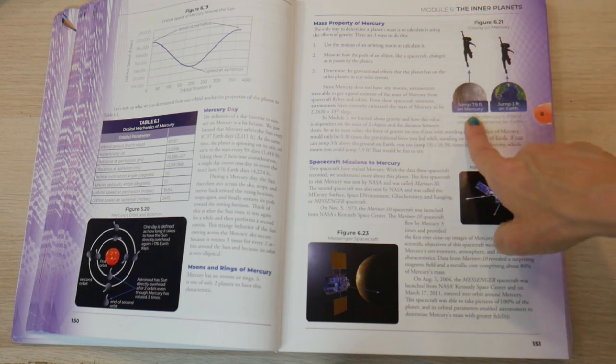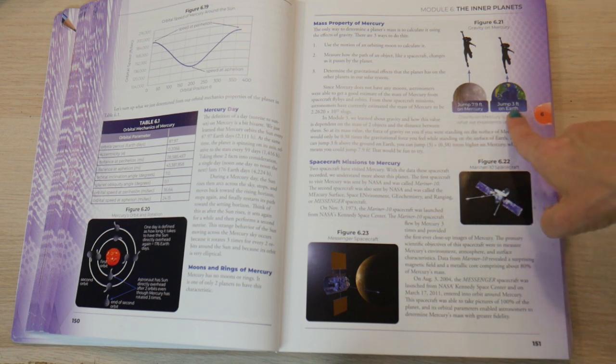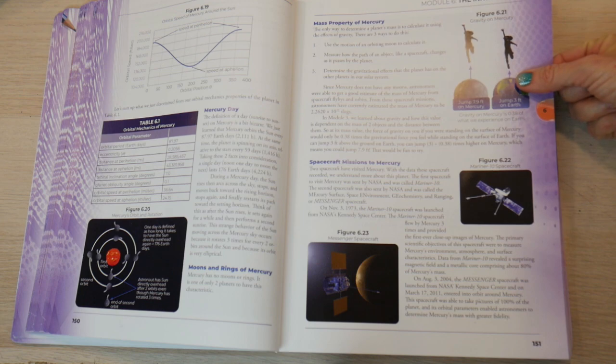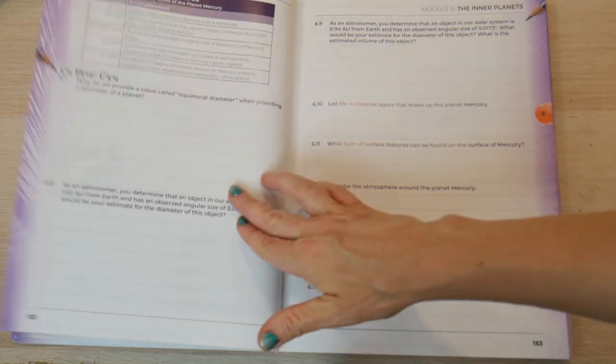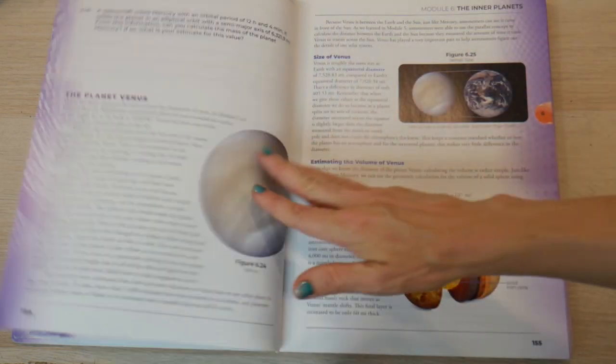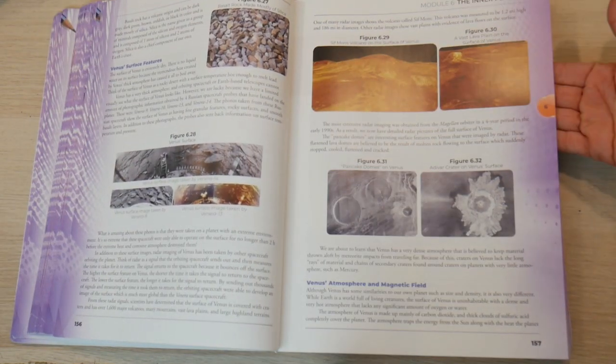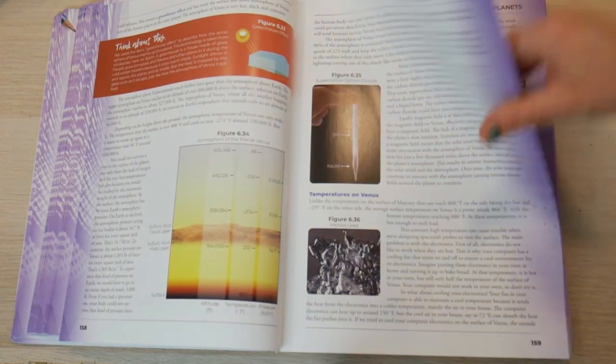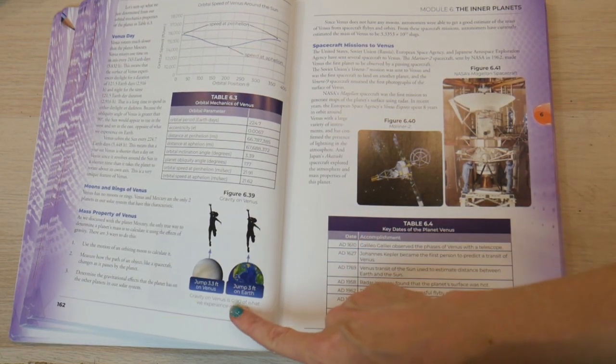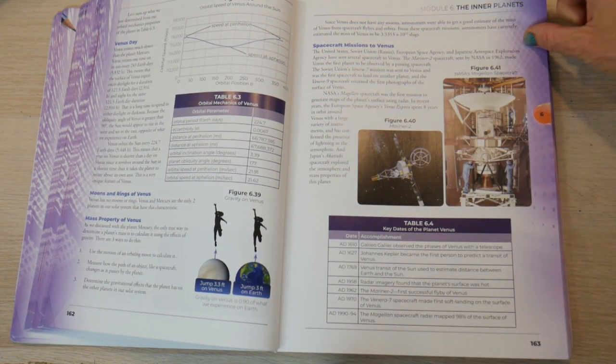That's going to have all the equations, that's the math side of things here. And then what a day is like on Mercury. It also talks about the speed, the moon and rings of Mercury, mass property. So I love this. Every single planet has this cute little picture where if you jump on Mercury you're going to jump 7.9 feet but it's only 3 feet on Earth. So they show you the difference and how gravity affects Earth versus the planet you're talking about. Spacecraft mission to Mercury, and then you've got your questions. You can do Mercury one week and then the following week you can touch on the next planet, which is Venus. It's the same kind of pattern here, which is really nice because you know what to expect and you can compare and contrast the different planets.